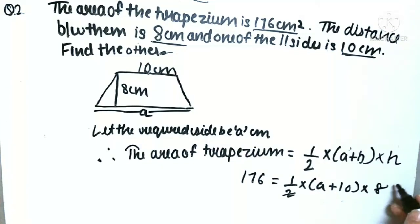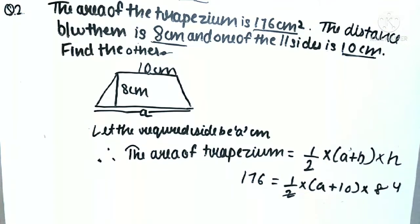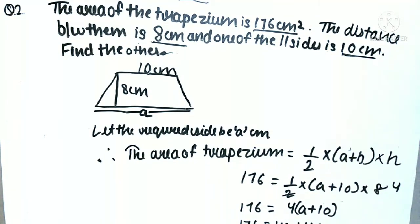2 and 8 will be cancelled out, we are left with 4. We can write it as 176 is equal to 4(a + 10). 176 will be equal to 4a + 40, then 4a will be equal to 176 minus 40.